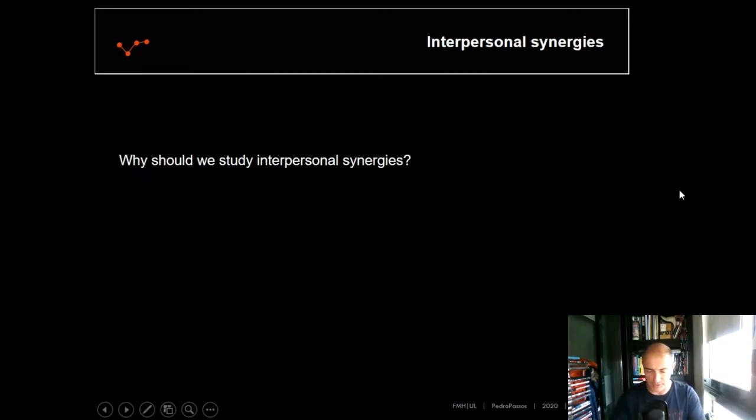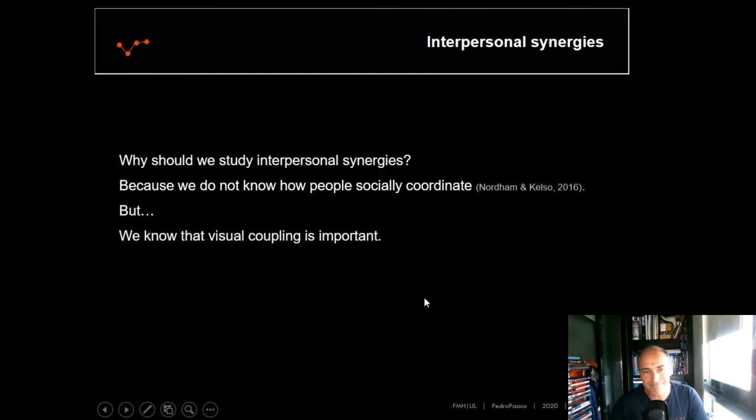So visual perception is the medium that allows us to coordinate with the others. But one question that emerged more specific to interpersonal synergies is this one. Why should we study interpersonal synergies? Well, because honestly, we do not know how people socially coordinate with each other. But we know that visual coupling is important.